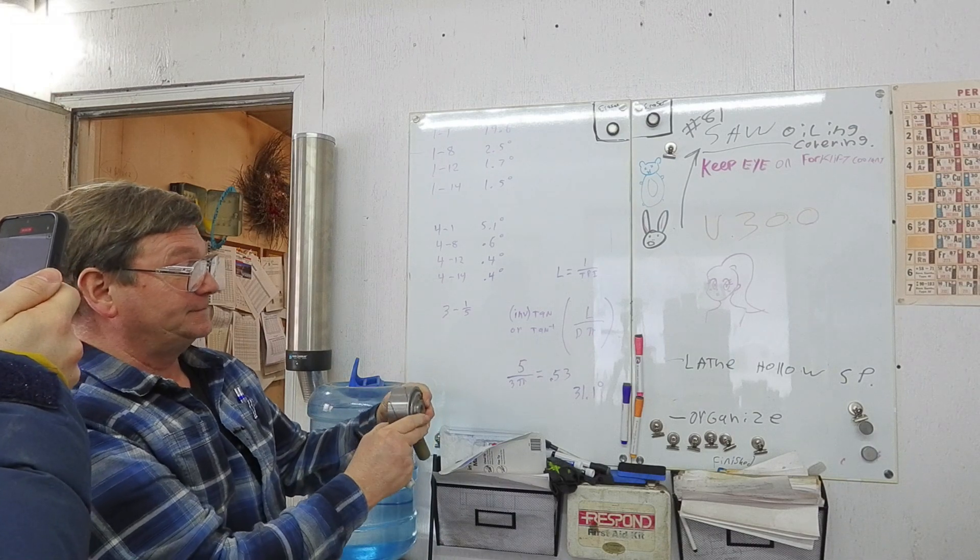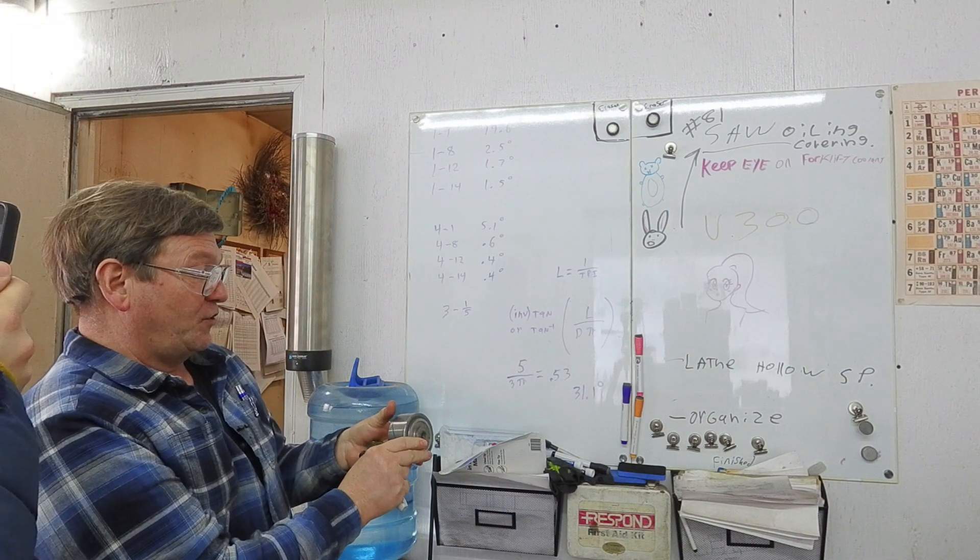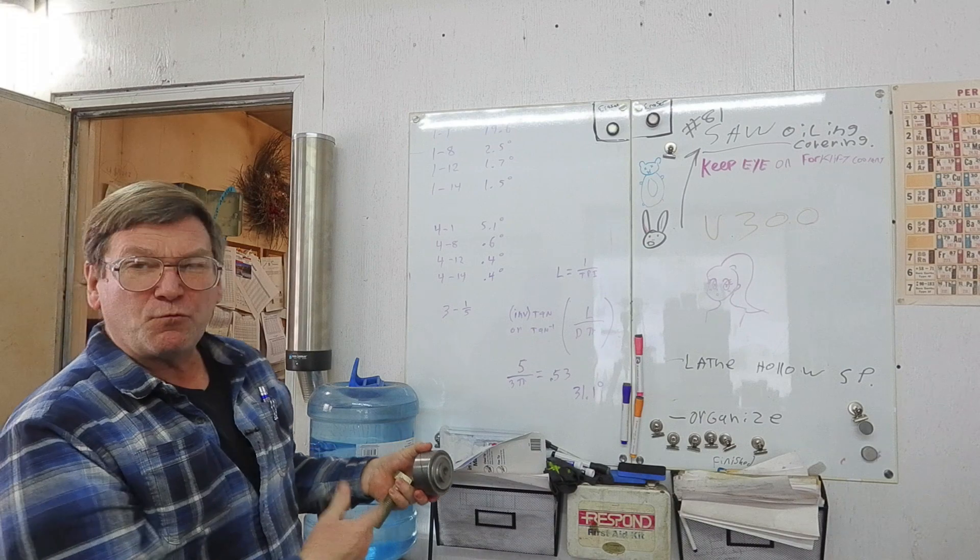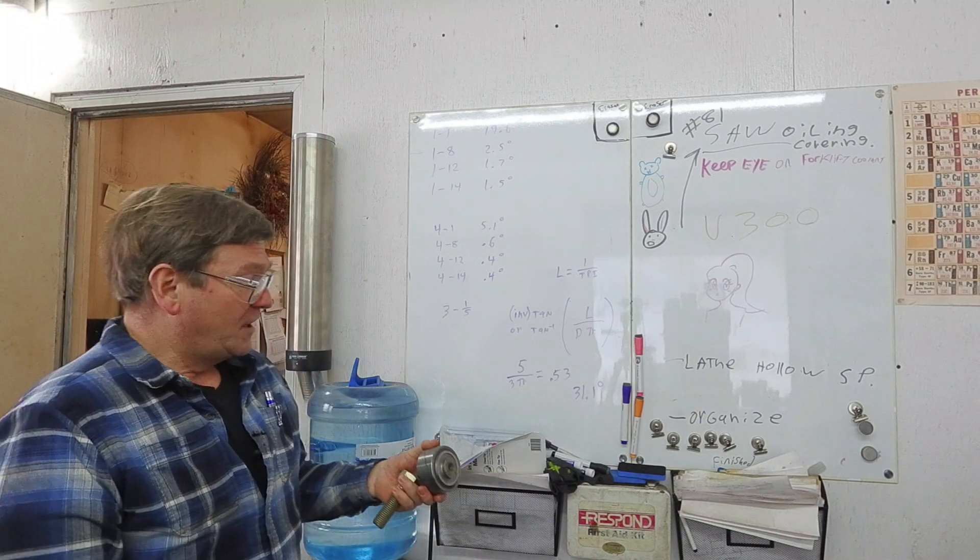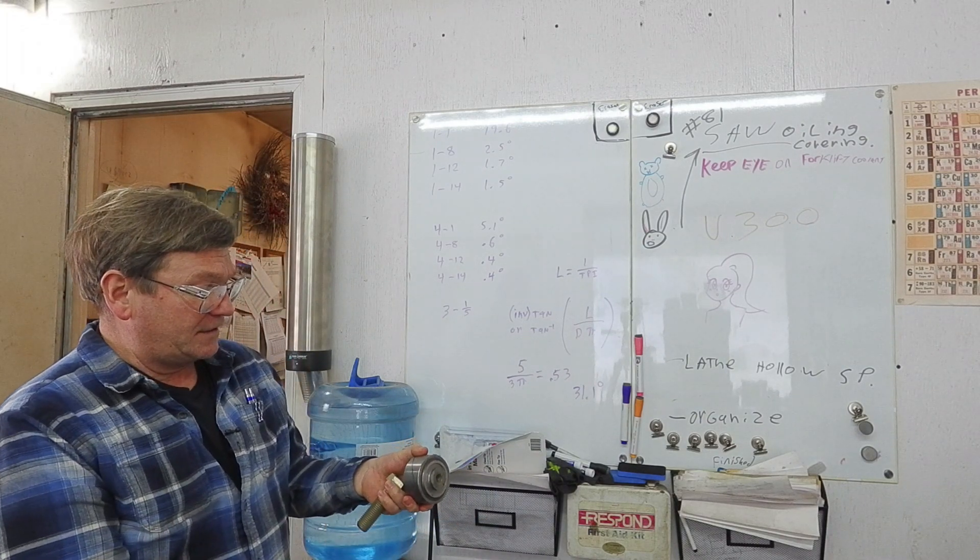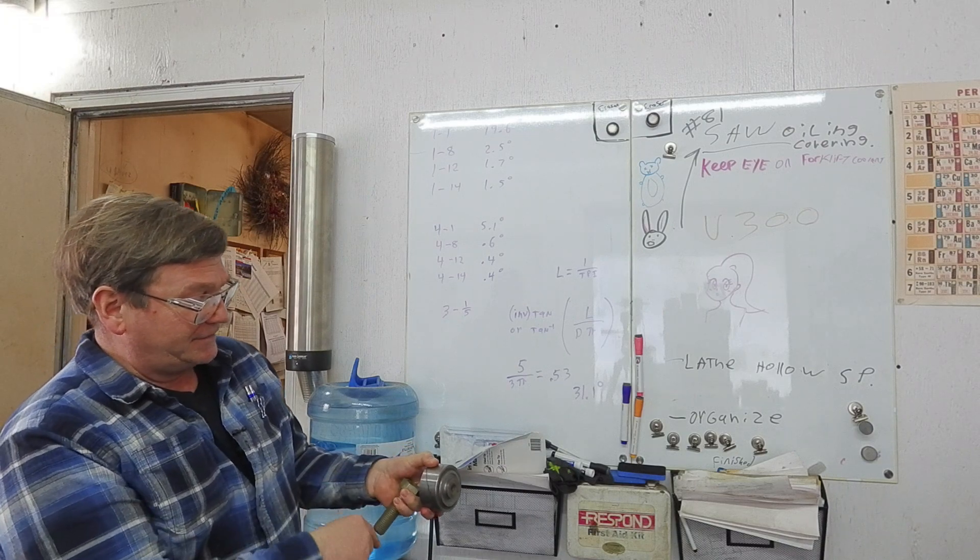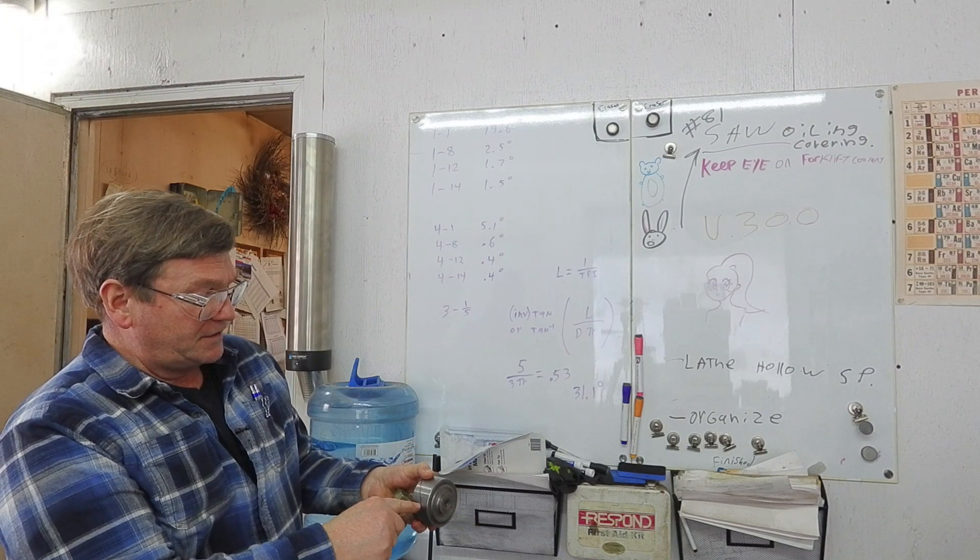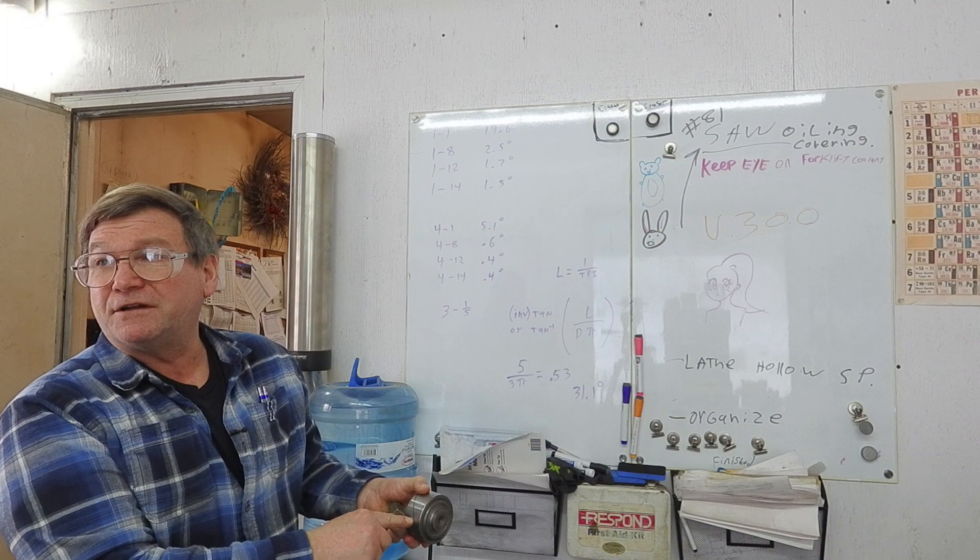So how do we figure out that angle? And why do we want to figure out that angle? The reason we want to figure out that angle is, if we're gonna cut this kind of a thread, we need to know how much extra clearance to leave on our tool.